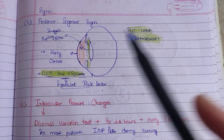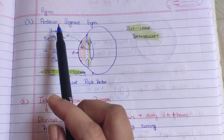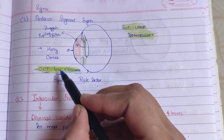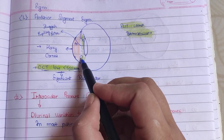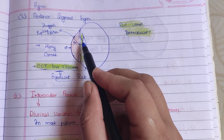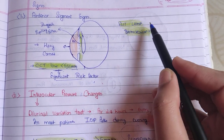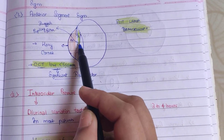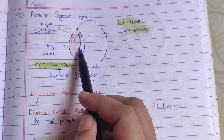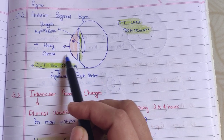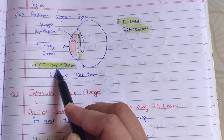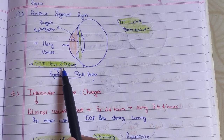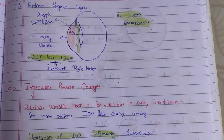Now let us talk about signs. Looking at anterior segment signs from cornea to lens — changes that can be seen on slit lamp biomicroscopy include: sluggish pupillary reflex, hazy cornea, and central corneal thickness, which is a significant risk factor when it is less than 555 micrometers.